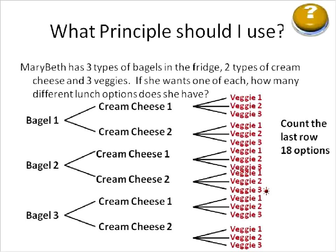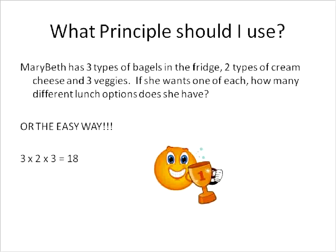Counting all the options in the chart, we get all the way to 18. So Mary Beth has 18 lunch options available to her. Or we can do it the easy way: using the product principle, we multiply the numbers together — three bagels times two cream cheese types times three vegetables — and that gives us a total of 18, the same number we counted in the chart.